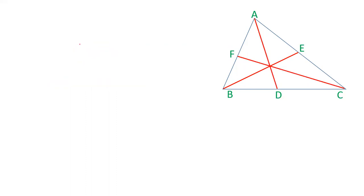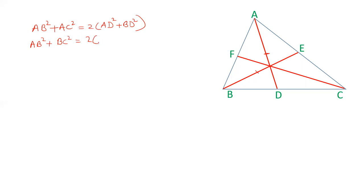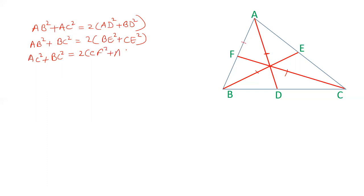Now let's apply this theorem in this triangle. If I take the median as AD, then its length can be calculated by the formula: AB² + AC² = 2AD² + BD². If I take the median BE, then: AB² + BC² = 2BE² + (half of AC)². And if I take the median as CF, its length can be calculated using: AC² + BC² = 2CF² + (half of AB)².